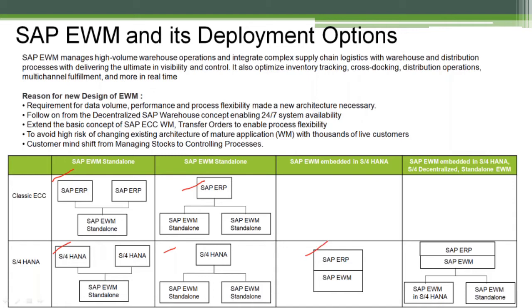Another deployment option is the embedded EWM, where SAP ERP and SAP EWM are both part of one instance — the same S4HANA system contains all ERP modules and EWM together. The benefit is no need to maintain two separate servers, and processing in S4HANA is fast. SAP suggests this solution for smaller and medium warehouses that traditionally used SAP WM. Finally, depending on your company, you can have a mix of all types of deployment options — some warehouses using embedded, some decentralized, and some connecting to standalone EWM.